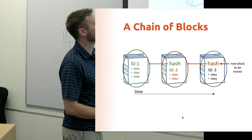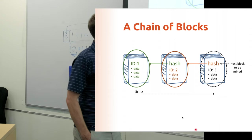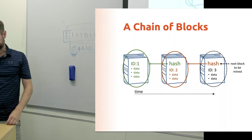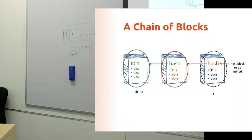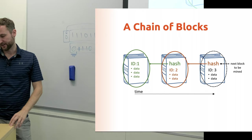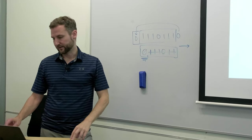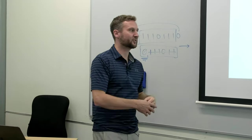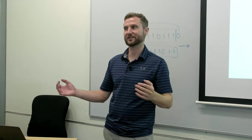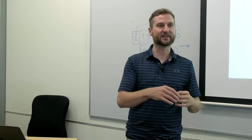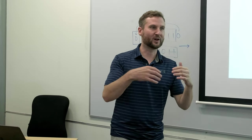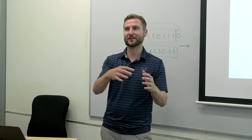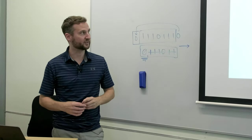In a chain of blocks, by including the hash of the previous block in the current one, and then that one in the next, you're building a chain of trust — a history going back to the beginning. In the future, part of the value of a blockchain will come from how long it's been alive, how far back you can trace that history. In tech they call this the first mover advantage — the first product with a good new idea that works gains tremendous advantage over others, and that's the advantage that Bitcoin has.